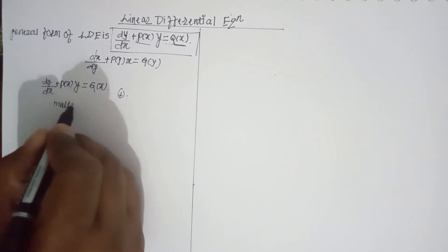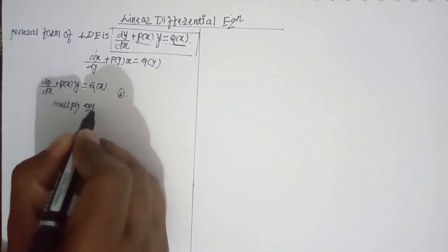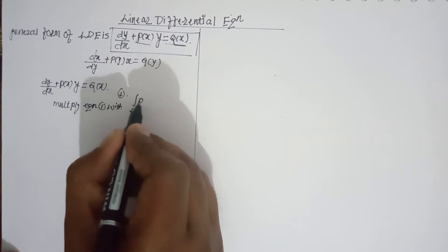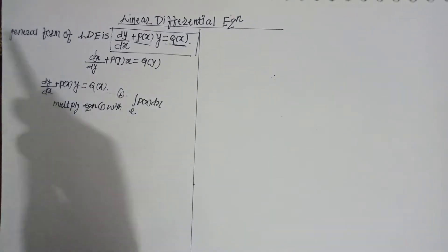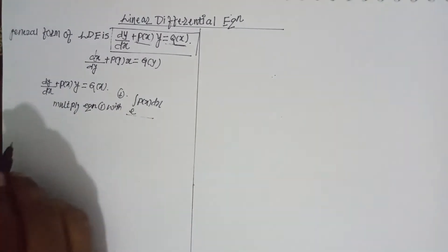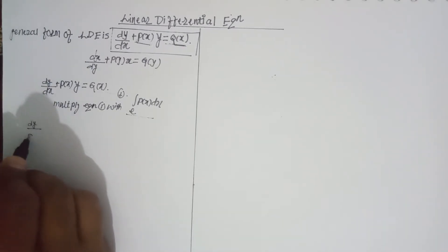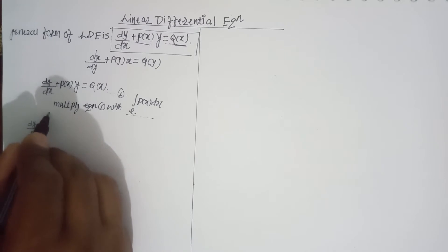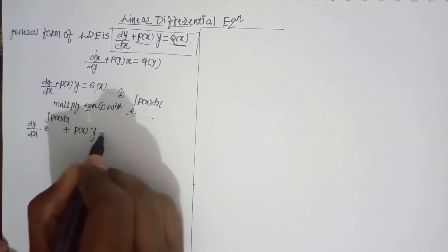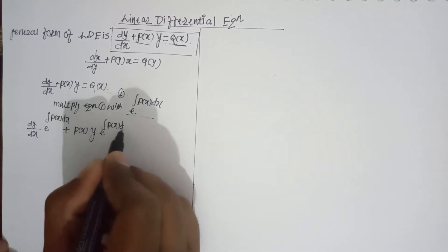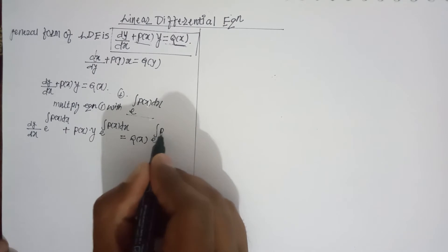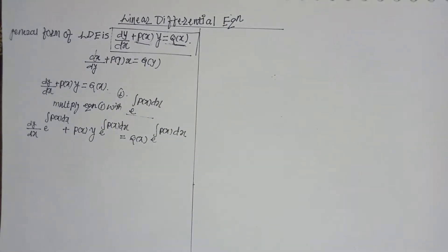We multiply equation 1 with the factor e to the power of integral of P(x) dx. So multiplying through: dy/dx times e^∫P(x)dx plus P(x)·y·e^∫P(x)dx equals Q(x)·e^∫P(x)dx.